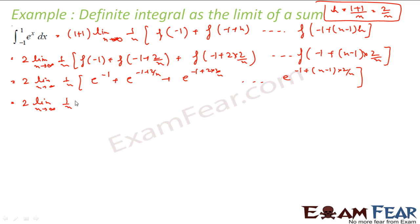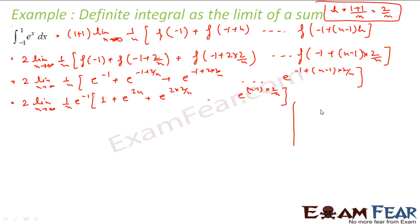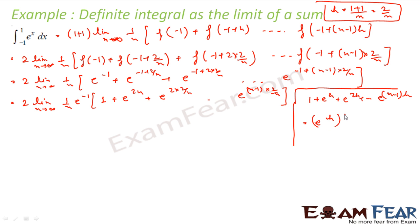Now if I take e to the power minus 1 common — since e to the power minus 1 is common everywhere — I take it out. So 1 by n into e to the power minus 1, and the remaining terms become: 1, then e to the power 2 by n, then e to the power 2 times 2 by n, and so on, up to e to the power n minus 1 times 2 by n. Now I know a formula: 1 plus e to the power h plus e to the power 2h, and so on, up to e to the power n minus 1 times h equals e to the power nh minus 1 by e to the power h minus 1.